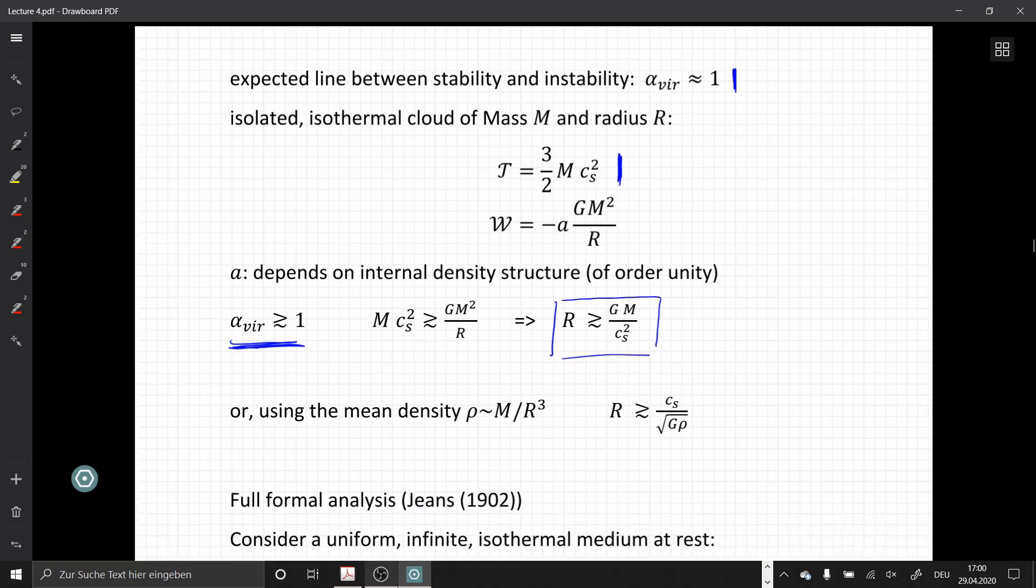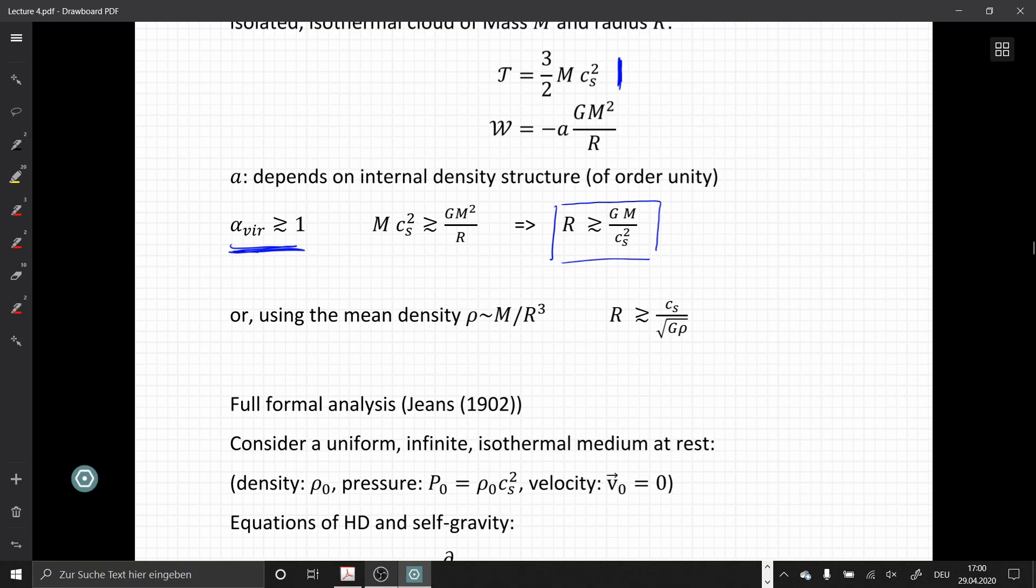Or if we replace the total mass by the mean gas density as M divided by R cubed, ignoring constant factors, we have a radius criterion of R greater or equal to Cs over square root of G times the density. Anything larger than this R is prone to gravitational instability.